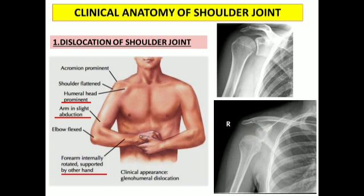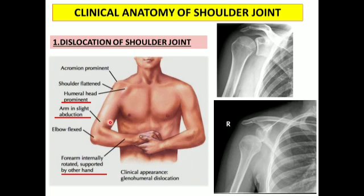This is a shoulder joint dislocation case. The moment the patient enters your OPD, you can observe how the patient is walking and maintaining posture — there itself you can get a clue. You can notice that the arm region will be slightly abducted and the elbow will be flexed.